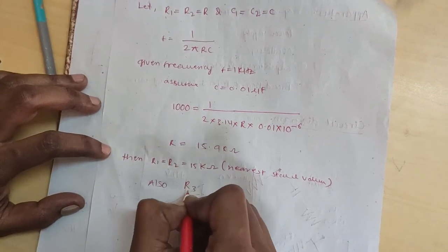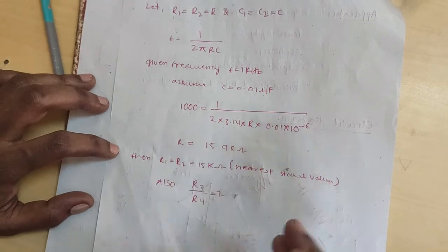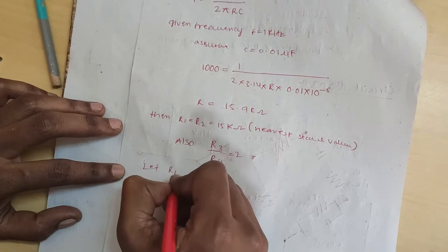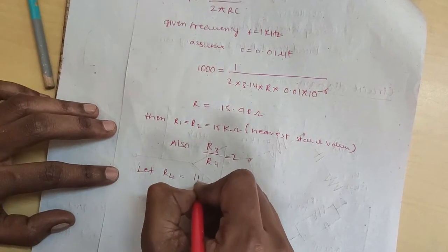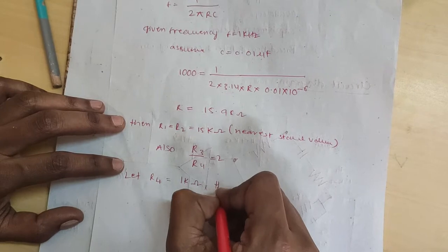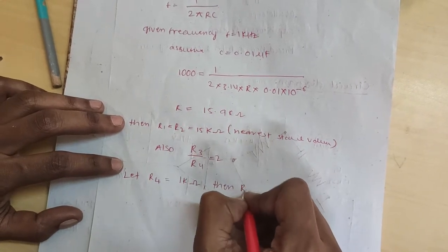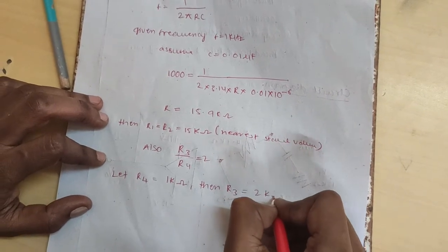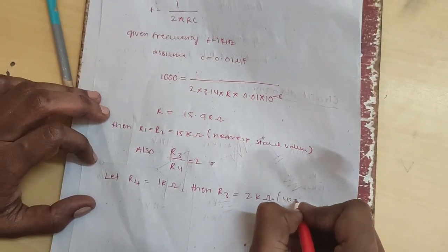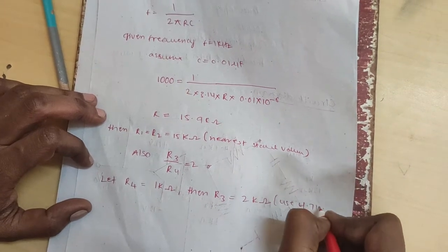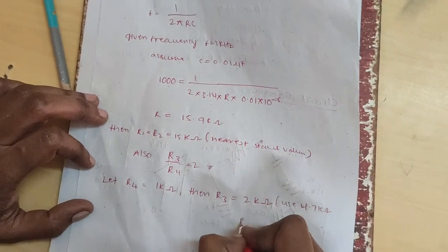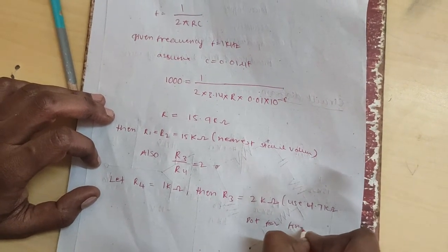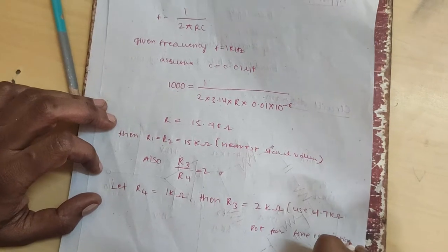R3 by R4 equal to 2. Let R4 equal to 1 kilo ohm. Then R3 equal to 2 kilo ohms. Here is the 4.7 kilo ohms potentiometer for fine corrections.